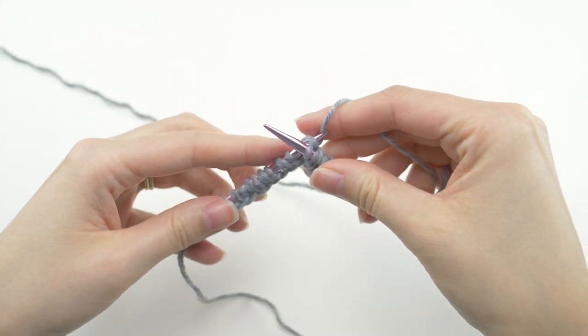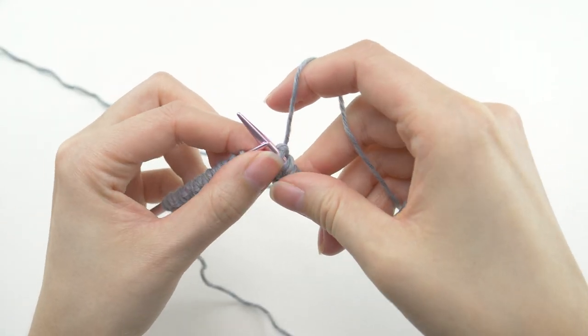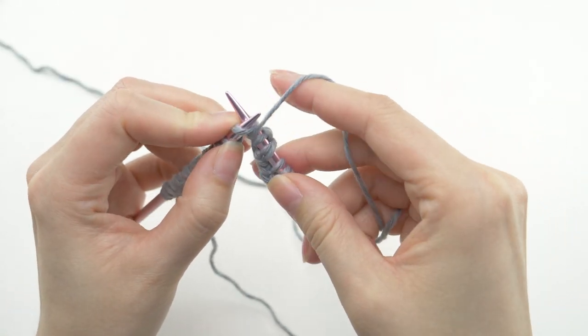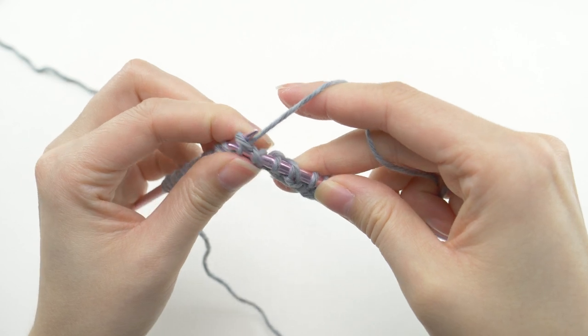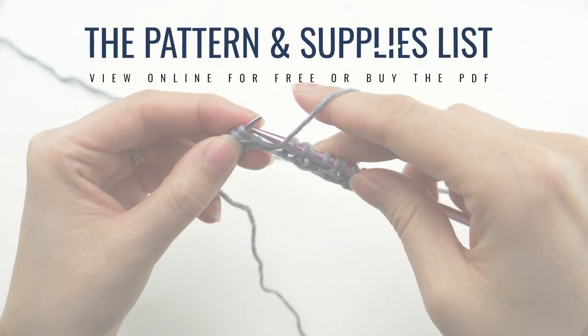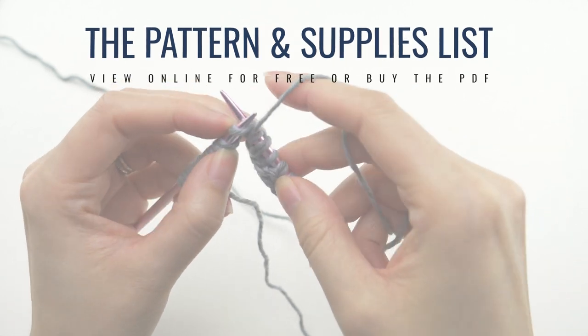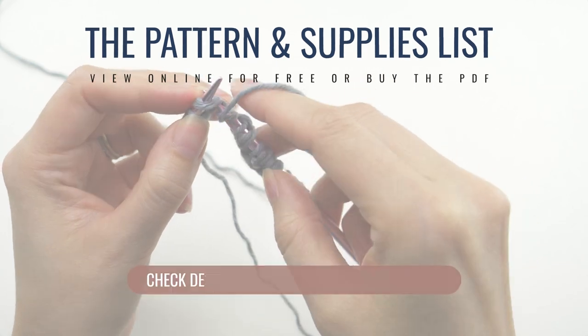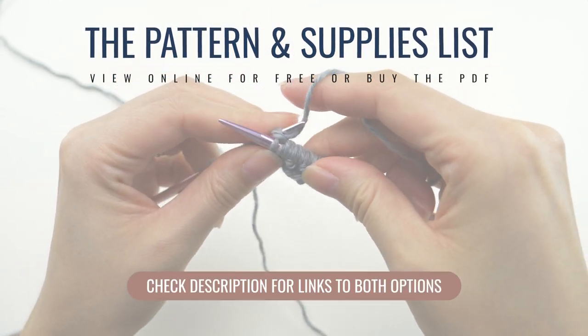Now if you're wondering about the supplies I'm using, or if you want to see the instructions for yourself so you can follow along that way, well I have all of that information and more in the pattern itself. You can view the pattern for free on my website, or if you prefer to have a copy in hand to print or save for later, you can pick up the PDF from my shop. I'll have a link to both of those options in the description below.